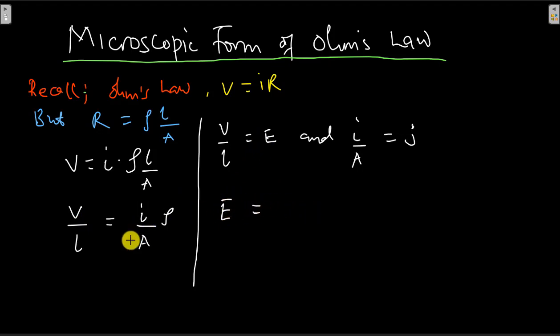So E equals the current density J times the resistivity ρ. That means the current density J is going to be equal to the electric field intensity divided by ρ.